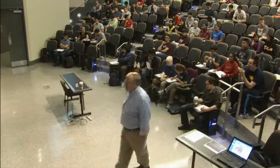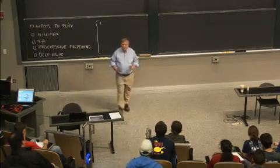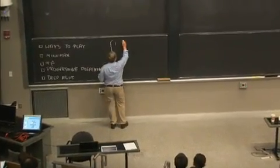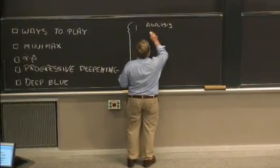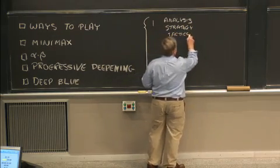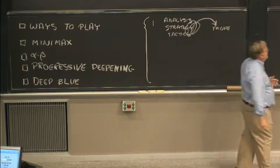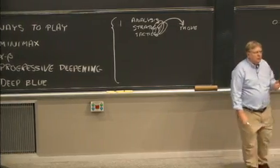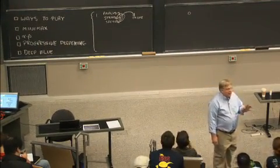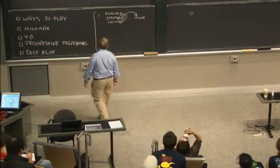Approach number one is that the machine might make a description of the board the same way a human would — talking about pawn structure, king safety, whether it's a good time to castle. So it would be analysis with some strategy mixed with tactics, all of which would result in some kind of move. But the trouble is, no one knows how to do it. And so in that sense, Dreyfus is right. None of the game playing programs today incorporate any of that kind of stuff.